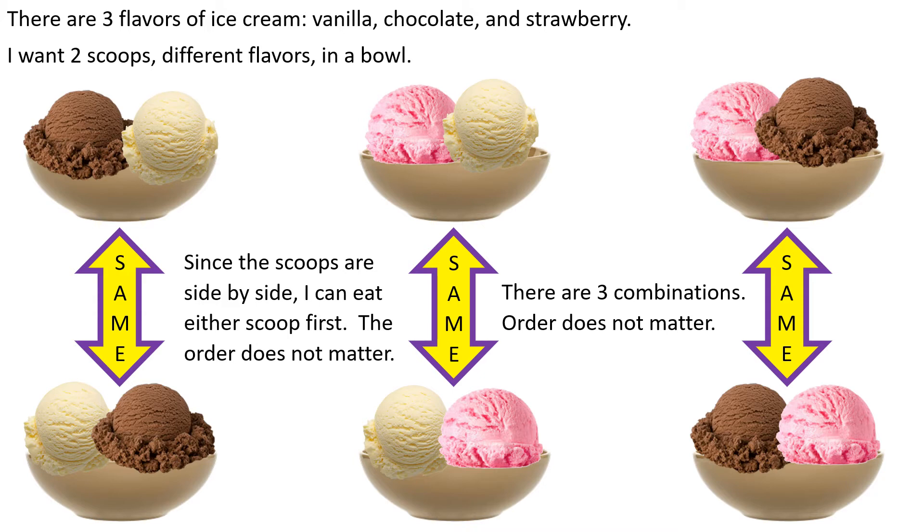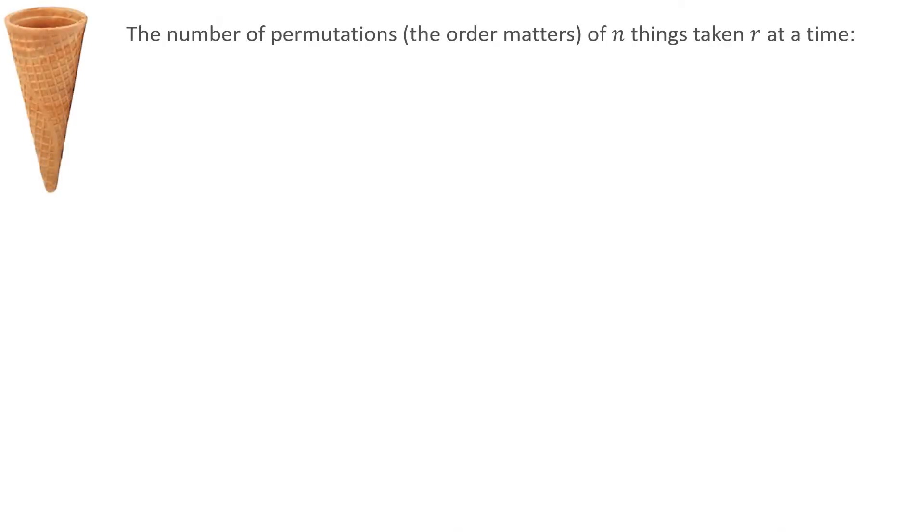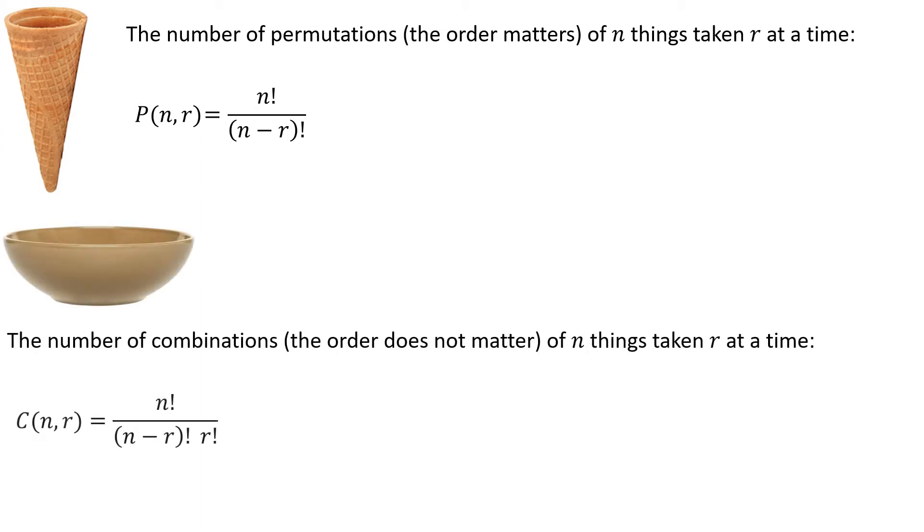So this is not permutations, this is combinations, because the order really doesn't matter. Whether the first scoop is vanilla and the second is chocolate, or the first scoop is chocolate and the second is vanilla, if they're sitting side by side in a bowl, it's the same thing. I've got a spoon and I can decide which one to start eating first. So if the order matters, we use a permutation, and that's what we did previous lesson. If the order does not matter, instead we're doing combinations.